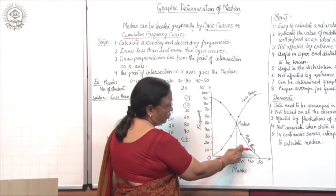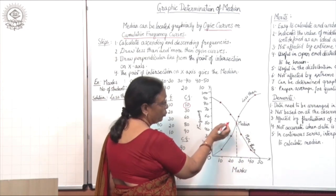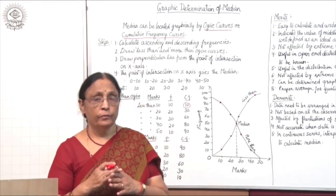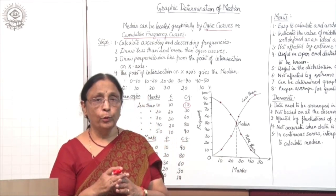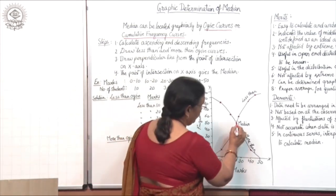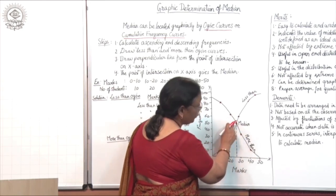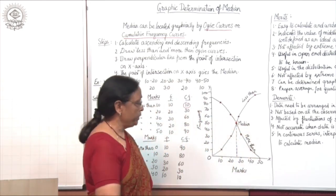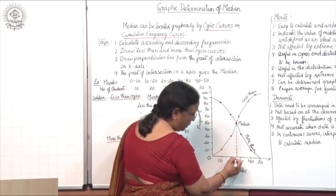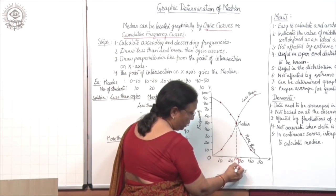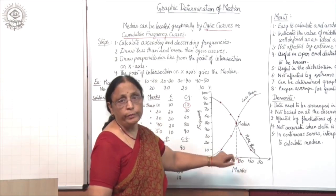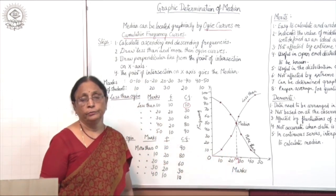When you draw the less than and more than ojive curves, you will find they intersect at exactly one point, because both curves are moving in opposite directions. This point of intersection gives you the median. Draw a perpendicular from that intersection point to the X axis — the value on the X axis, which falls between 20 and 30, is the median.